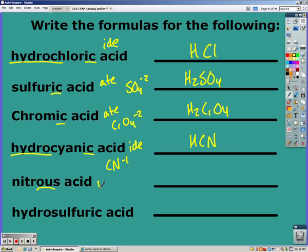Nitrous acid came from nitrite, which has a negative one charge, so HNO2. And hydrosulfuric acid came from sulfide with a negative two charge, so we need two hydrogens in front.